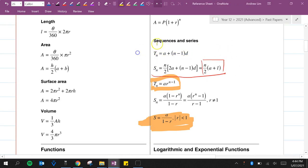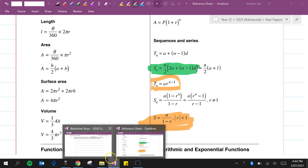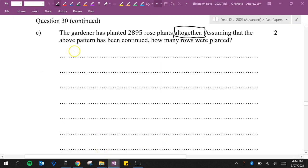I'll be using this formula here. S of N is equal to N over 2 times 2A plus N minus 1D. So S of N is equal to N over 2, 2A plus N minus 1D. So we know that that's going to equal 2,895.